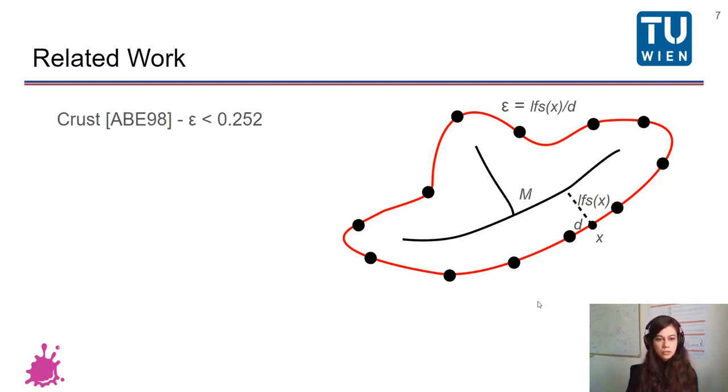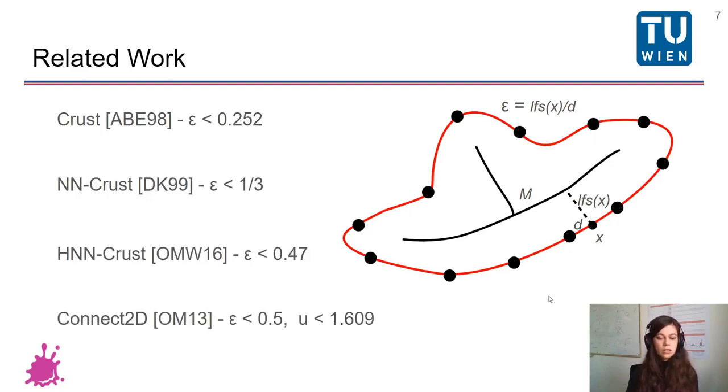This has been introduced by CRUST and the current best value for epsilon, which means that we require the less samples has been achieved in Connect2D 0.5, but they also require a non-uniformity ratio of 1.6. The non-uniformity ratio is just the ratio between the two neighboring edges for each point. So we are not allowed to have a big difference between neighboring edges.